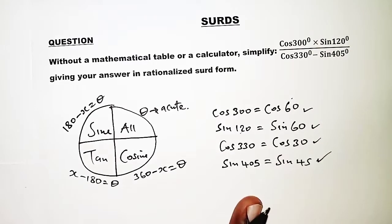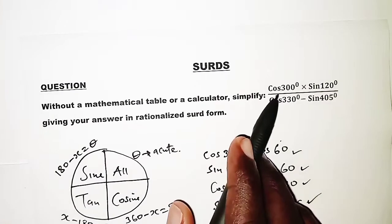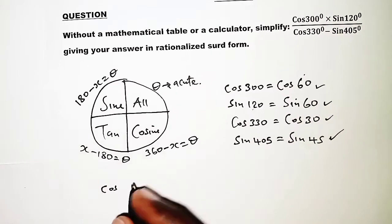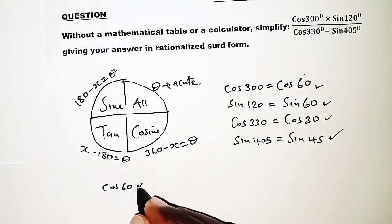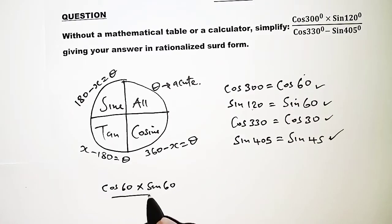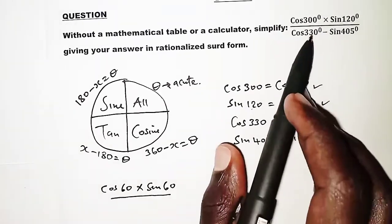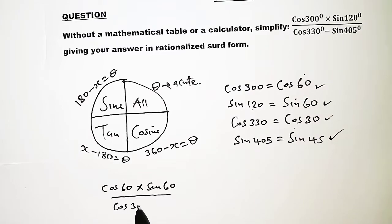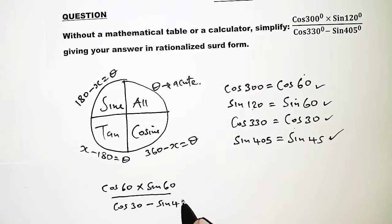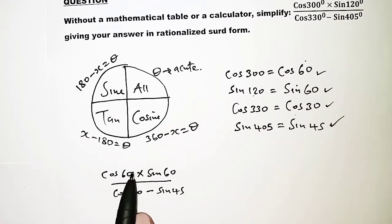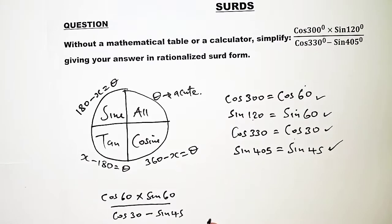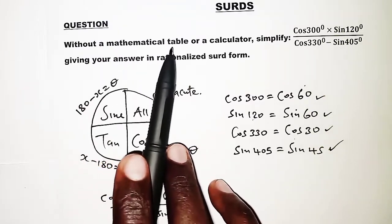These are the values we replace in the equation. So we have cosine of 300 becoming cosine of 60, times sine of 120 which is sine of 60, all over cosine of 330 which is cosine of 30, minus sine of 405 which is sine of 45. The angles 60, 30, and 45 are special angles, and since we cannot use a calculator or table, we use special triangles.